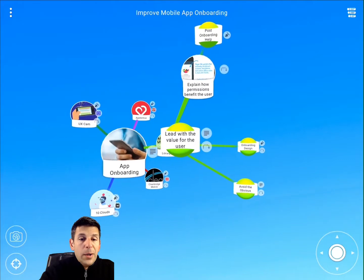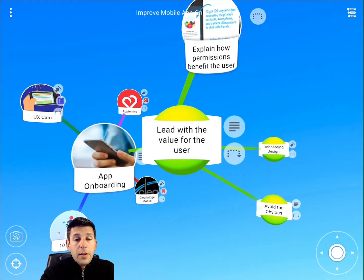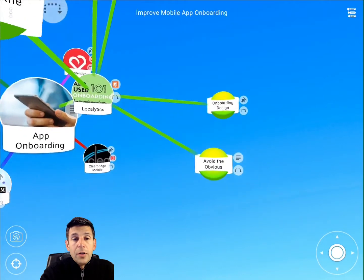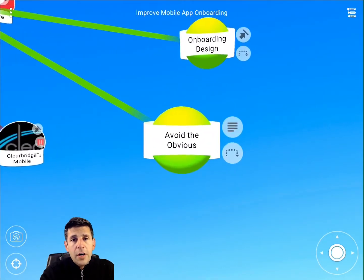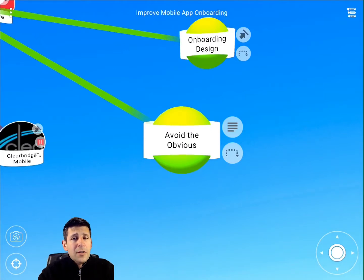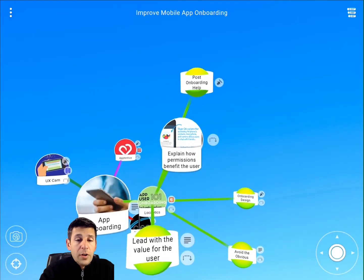Regardless of the approach, Localytics talks about leading with value for the user — that's a recurring theme and pretty much every article on app onboarding covers that. They also talk about avoiding the obvious. You've only got so much time and attention with these users — you don't want to be telling them things about basic navigation they undoubtedly already know just from getting to your app in the first place. So avoid covering that stuff.